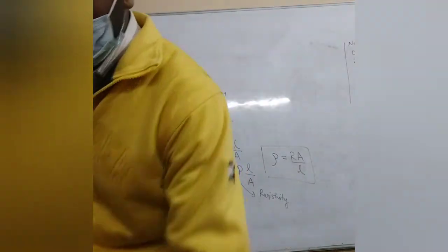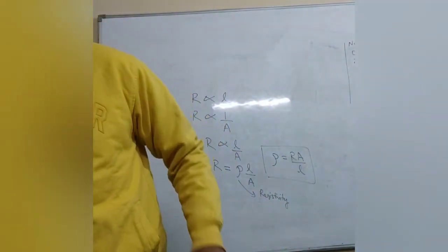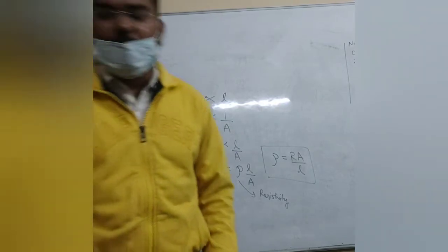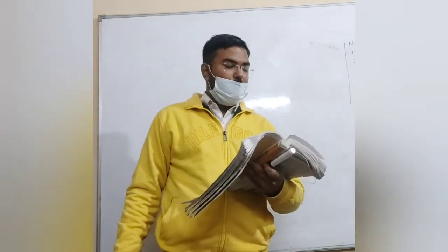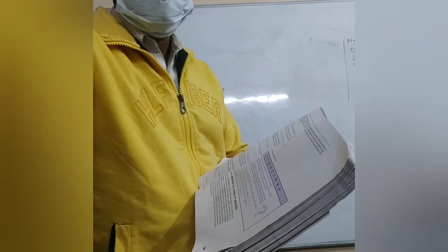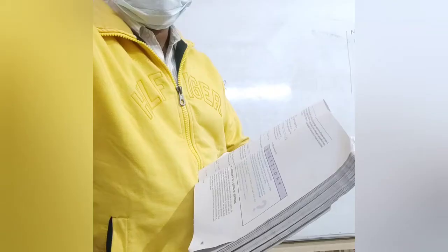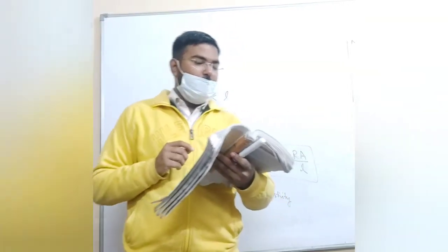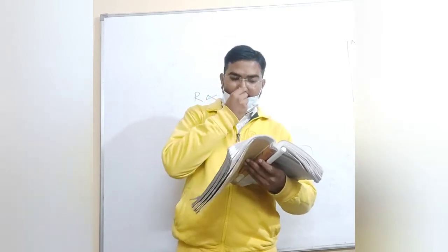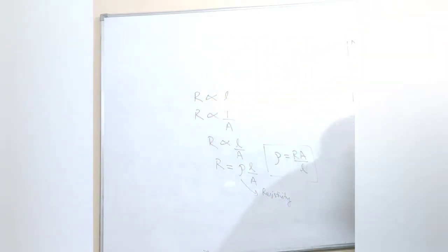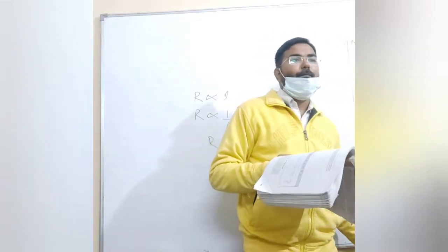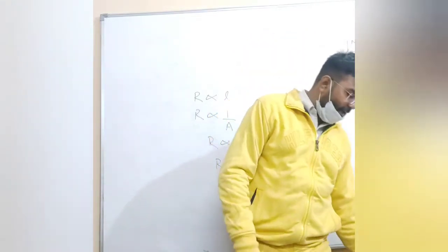In example 12.3, how much current will an electric bulb draw from a 220 volt source if the resistance of the bulb filament is 1200 ohm? And how much current will an electric heater coil draw from a 220 volt source if the resistance of the heater coil is 100 ohm? The potential is the same — 220 volt — but the resistance is different: one is 1200 ohm and the other is 100 ohm.